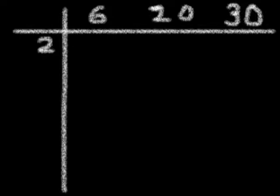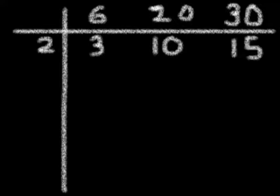Divide all the numbers starting with a small number like 2. 6 divided by 2 is 3. 20 divided by 2 is 10. And 30 divided by 2 is 15.